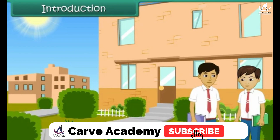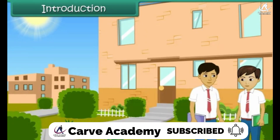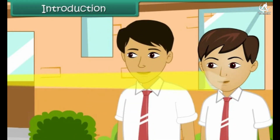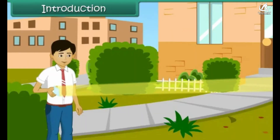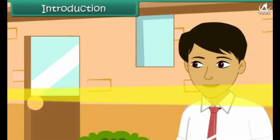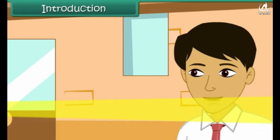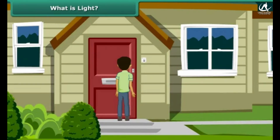It is recess time at school. You and your friends are out in the lawns. Suddenly a bright light hits you in the eye. You and your friends move to a different location; this time the bright light hits your friend. The bright light seems to be following you. You are confused. You look around and see Aman standing at a distance with a mirror in his hand. In this lesson we will discuss light, shadows, and reflection in detail.